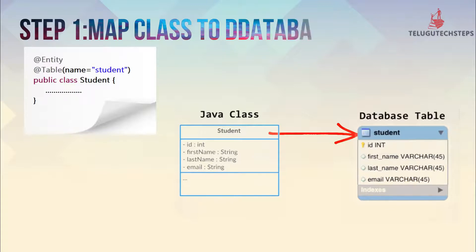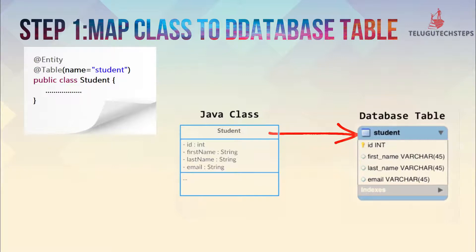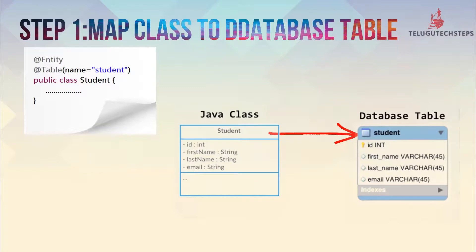We are mapping this class — the Student Java class — to the database table named 'student'. We are mapping using @Entity: this Java class is mapped with database table 'student'. At the rate entity (@Entity) and at the rate table (@Table), within parentheses, name equals 'student'.